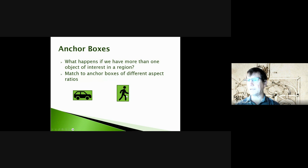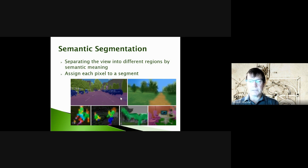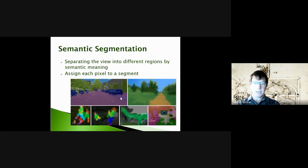So we had image classification, and then object localization where you're looking at an image with just one object and you want to localize it within that image. Then we have object detection where we're looking at multiple objects of multiple classes within a single image.